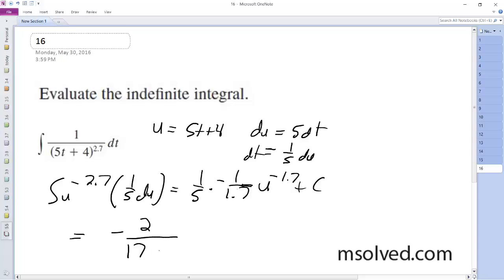That's just simplified so there's no decimal. And then we get 5t plus 4 on the bottom times 1.7 plus c.